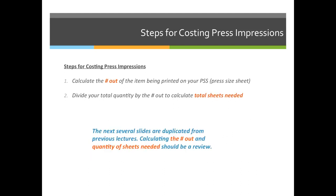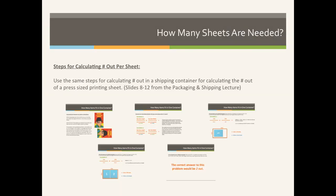So let's walk through this together. The first couple steps should be very familiar to you. If you're still having trouble with this, please come see me during my open office hours or online chat hours, or you can reference the last couple lectures to replay the strategy for completing those tasks. Step one is to calculate the number out of the item being printed, and step two is to divide the total quantity by the number out. At this point we've done this six or seven times, so you should really understand it — let's walk through that pretty quickly.